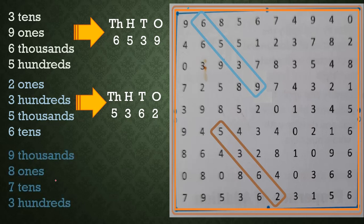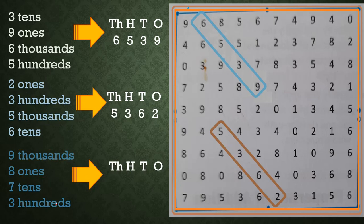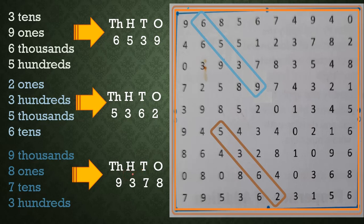Now the last problem. The jumbled place values have the highest place as thousands and lowest as ones, so we write place names from ones to thousands: ones, tens, hundreds, thousands. Forming the number: nine thousands — nine in the thousands place; eight ones — eight in the ones place; seven tens — seven in the tens place; three hundreds — three in the hundreds place.